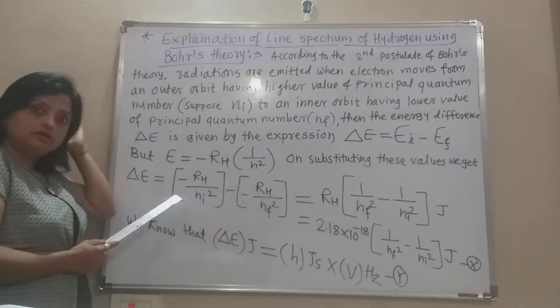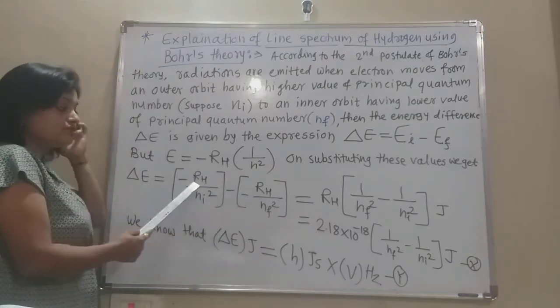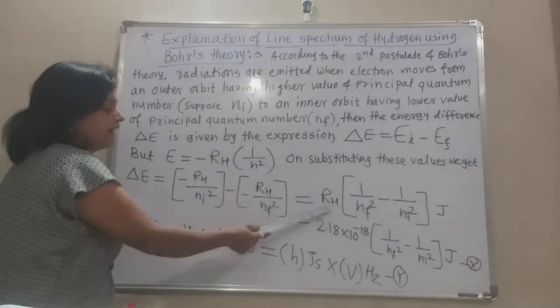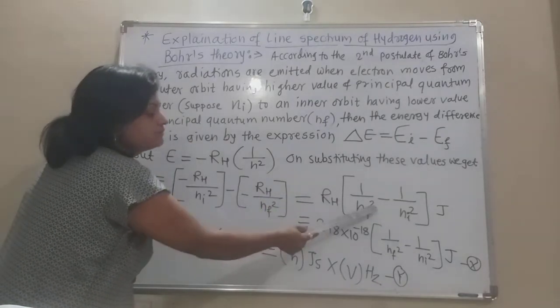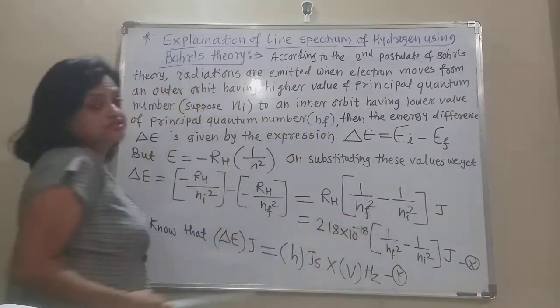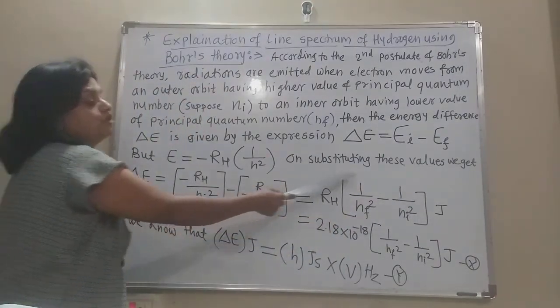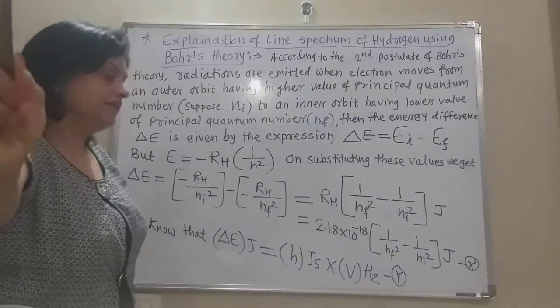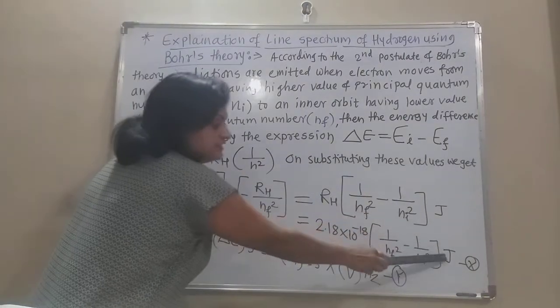Both terms have the common factor RH, which is taken out. The result is delta E equals RH times 1 over Nf squared minus 1 over Ni squared. This relation is obtained in joules, where the value of RH is 2.18 times 10 raised to minus 18 joules.